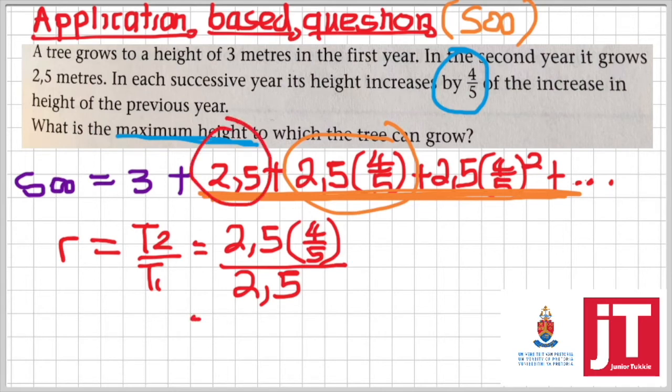Then simplifying that, we're going to get our R being equal to 4 over 5, which is that 4 over 5 that we had circled earlier on.